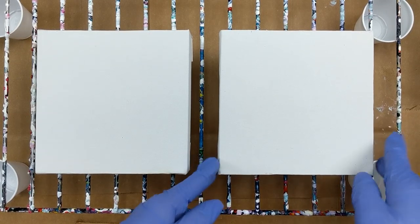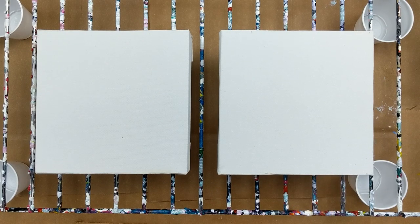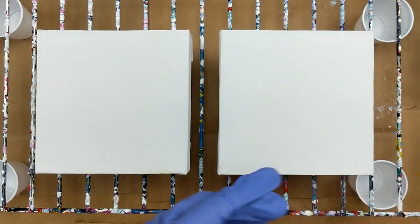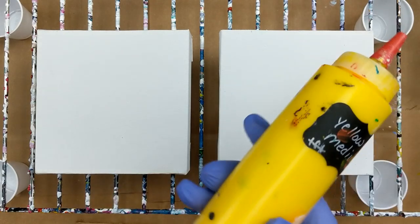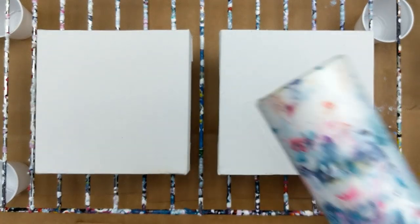Hey everybody, today I am working on six by six canvas and I'm only going to be using the primary colors. I've got phthalo blue from Artist Loft, yellow medium from Fine Touch, crimson red from Fine Touch, and my white which is Artist Loft flow acrylic.